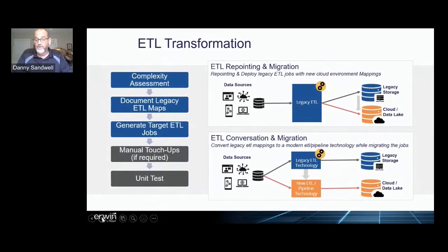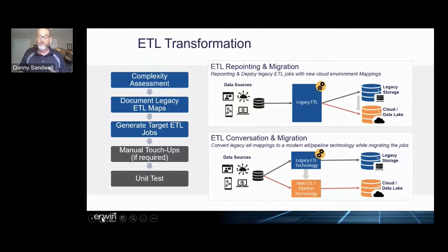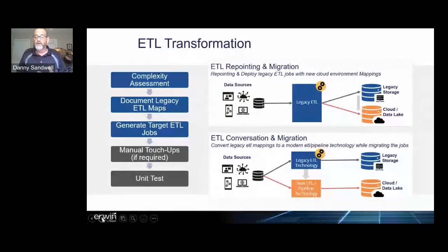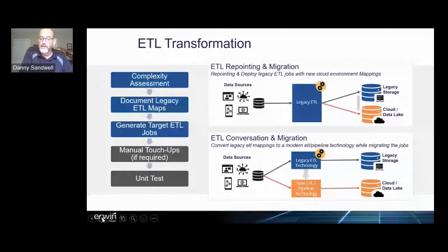You can make the choices: am I just going to repoint my data movement and migrate those jobs to the new environment on the cloud, or am I going to take full advantage of it by actually converting my data movement technologies? We've reverse engineered them into abstracted logical mapping documents, and we can point that through our technology to any of the technologies — whether it's legacy or the newest and latest — and recreate that architecture with a high degree of accuracy and integrity, with very little risk, letting you take advantage more quickly of all the capabilities you were looking for when you moved to the cloud.